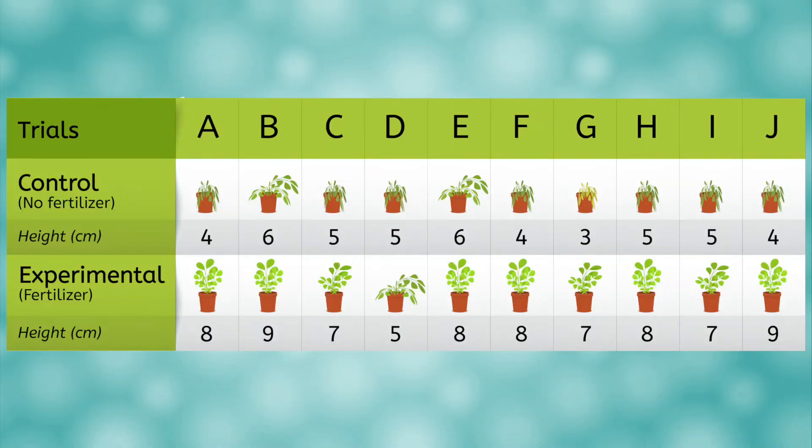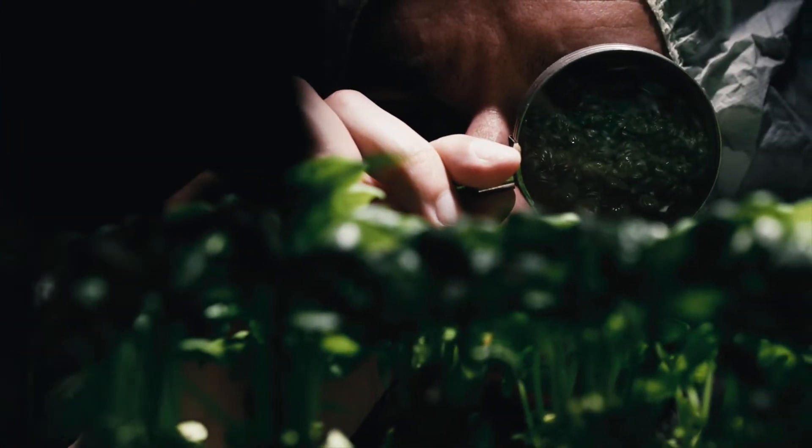Notice that our data table is separated into the control and experimental group, and each group had 10 trials, labeled A through J, which all started out being identical. The only difference was that the experimental group was given fertilizer, and the control group was not. We have a picture of what each plant looked like at the end of the experiment, as well as its height, measured in centimeters. What are your first thoughts when looking at our data? Was our hypothesis accurate? Pause the video for a moment and write down your initial observations about our data.